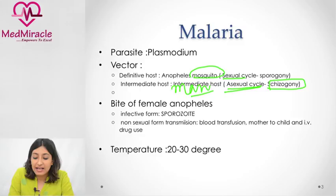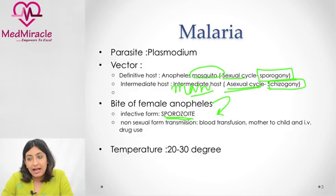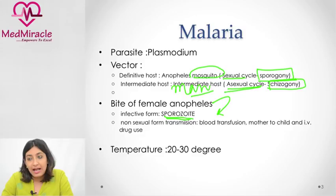Malaria spreads through the bite of the female Anopheles. The infective form that enters us from the mosquito is the sporozoite. Transmission can also happen through non-sexual forms: blood transfusion, directly from mother to child, and through IV drug usage.